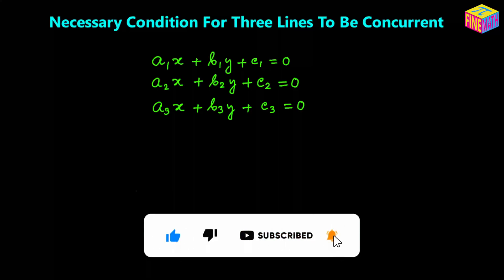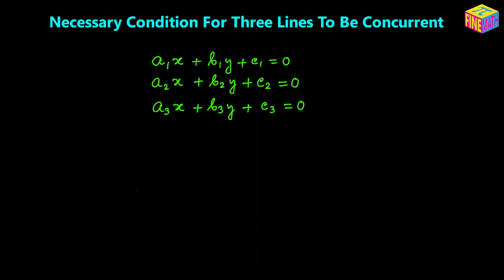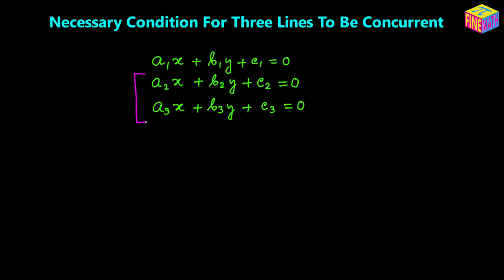In this video we are going to find out what condition tells us whether the three lines are concurrent or not. As I discussed in the previous video, we can use the cross multiplication method to solve for x and y using two of these equations. Let's suppose we are going to use the second and third equations and find the value of x and y.